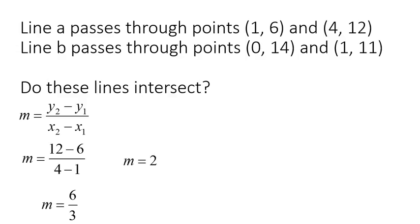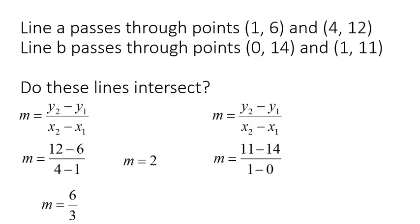Now let's look at Line B, passing through (0, 14) and (1, 11). Setting up y₂ minus y₁ over x₂ minus x₁ gives us 11 minus 14 over 1 minus 0, which is negative 3 over 1. The slope of Line B is negative 3. Since the slopes of the two lines are different, they will intersect at one point — they are not parallel.